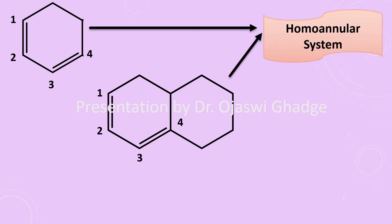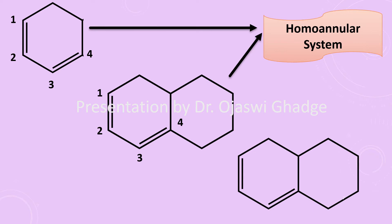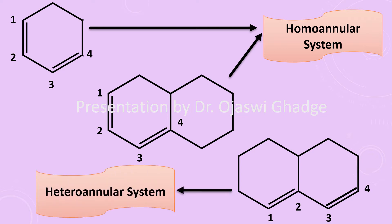These are called homoannular systems. Now, if in the third structure I remove the double bond from one ring and place it in the other ring, I see again two double bonds — a conjugated diene system. Such a conjugated diene system where the double bonds are placed in two different rings is called a heteroannular system.